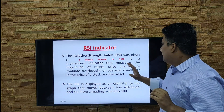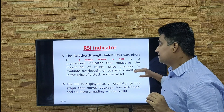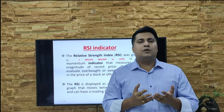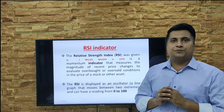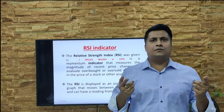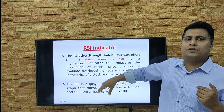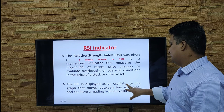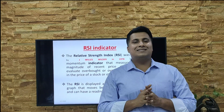RSI stands for Relative Strength Index. It measures the magnitude of recent price changes to evaluate overbought or oversold conditions. Basically, it gives you information about whether a share is overbought or oversold based on price changes. It works as an oscillator moving in a particular range — that range is 0 to 100. The RSI is displayed as an oscillator reading from 0 to 100.